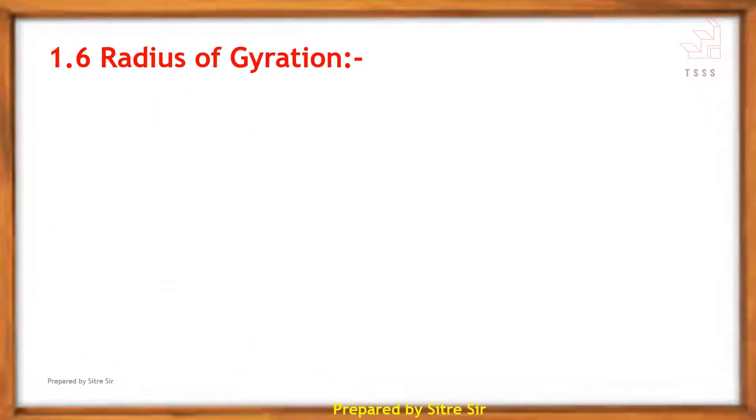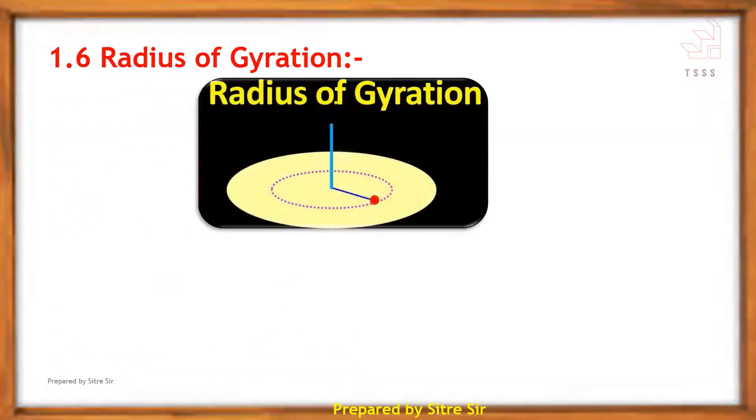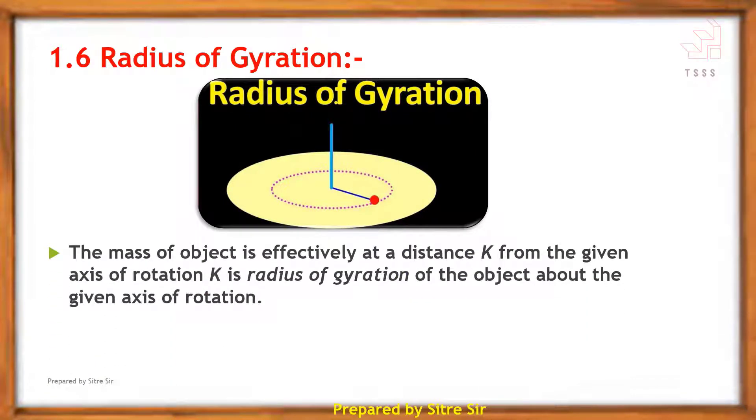Next point is radius of gyration. Let us observe this diagram. The mass of object is effectively at a distance K from the given axis of rotation. K is radius of gyration of the object about the given axis of rotation.